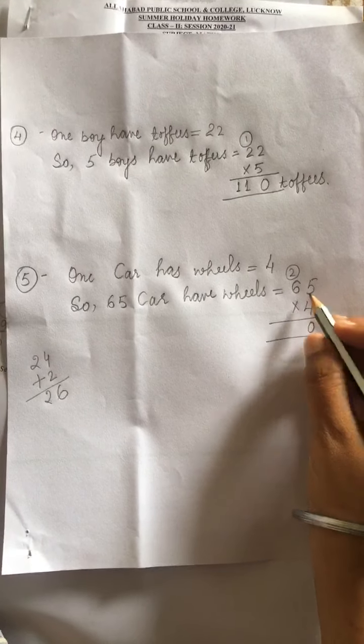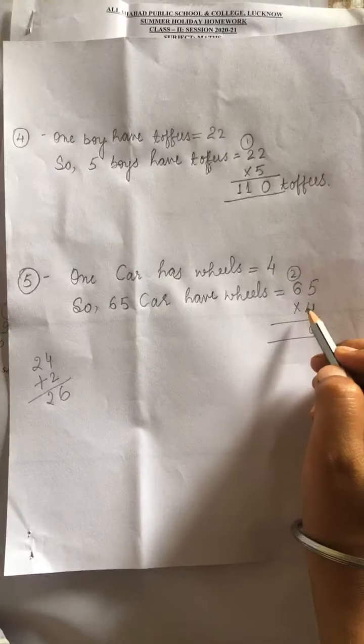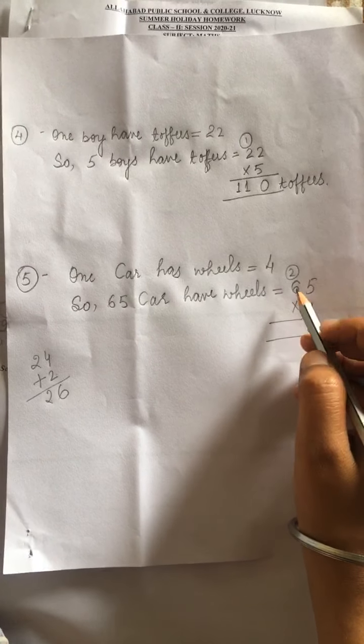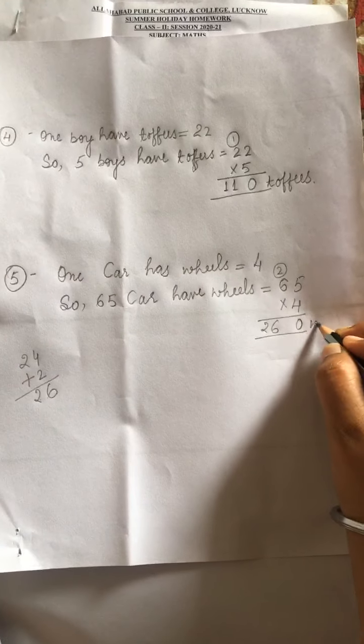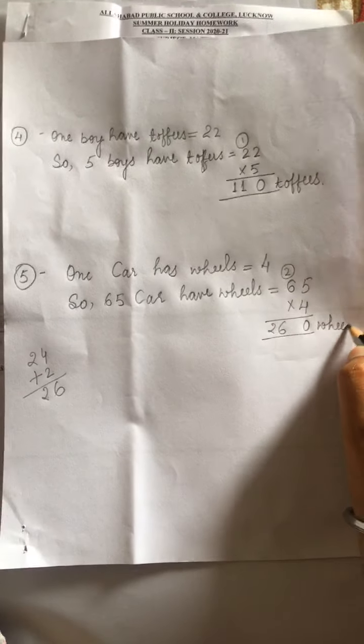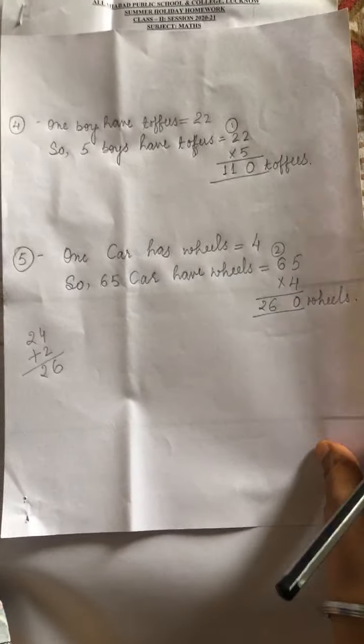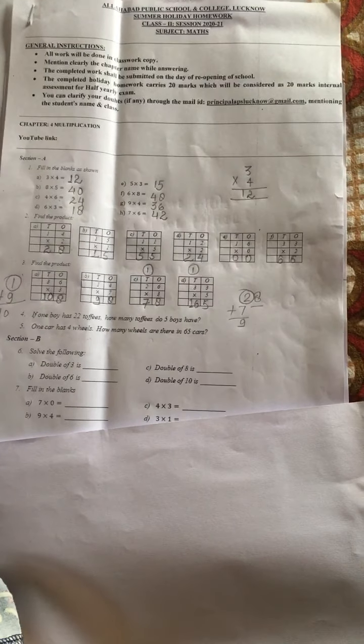So 4 times 5 is 20, 2 carry. 4 times 6 is 24 aur 2, 26. So 65 car have 260 wheels.